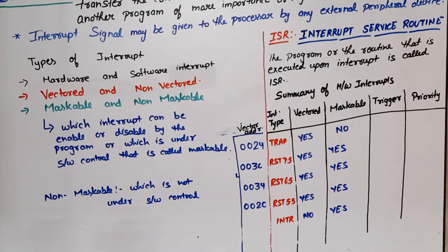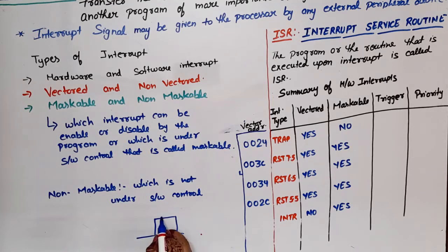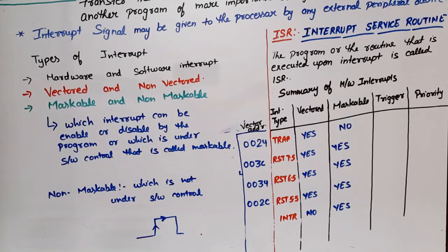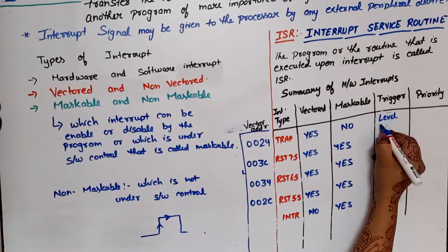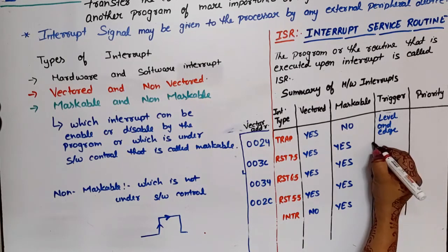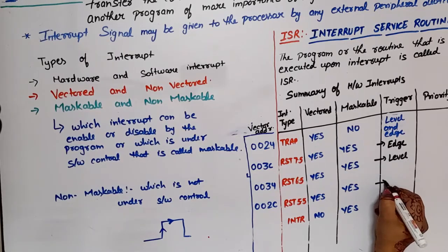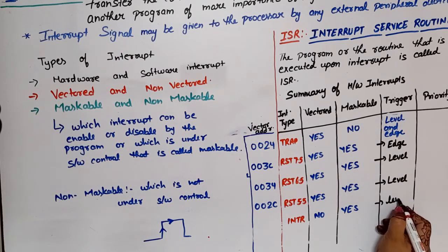Now I will tell you how to trigger these interrupts. There are two types of triggering. If a device is edge-triggered, it will trigger on the rising or falling edge of the clock pulse. If it is level-triggered, it will trigger on either positive level or negative level. TRAP is both level-triggered and edge-triggered. RST 7.5 is edge-triggered. The remaining interrupts — RST 6.5, RST 5.5, and INTR — are level-triggered.